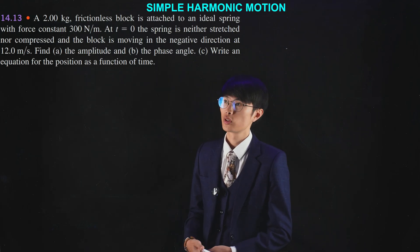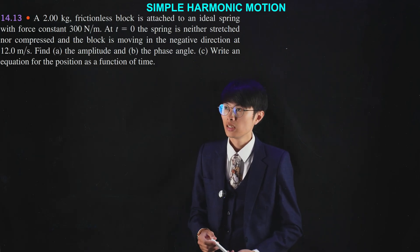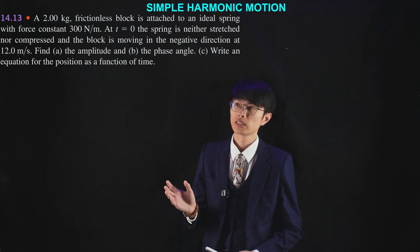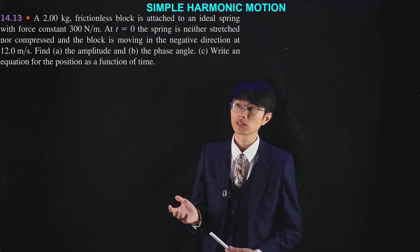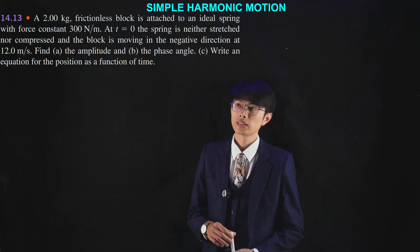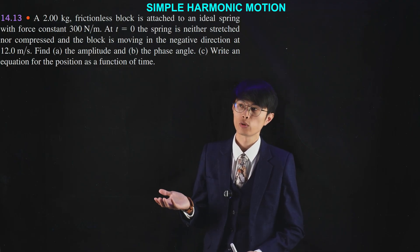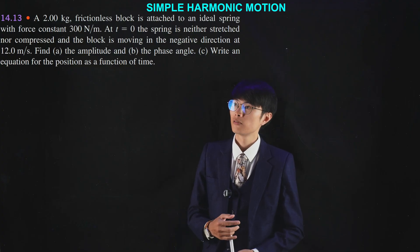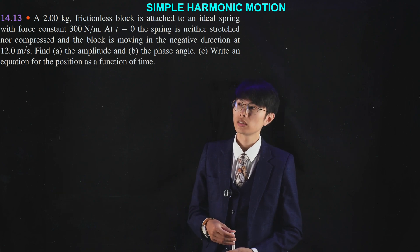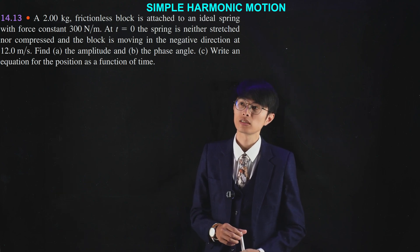Let's look at problem 14.13. A 2.00 kilogram frictionless block is attached to an ideal spring with a force constant of 300 newtons per meter. At t equals zero, the spring is neither stretched nor compressed, and the block is moving in the negative direction at 12.0 meters per second. Find: (a) the amplitude, (b) the phase angle, and (c) write an equation for the position as a function of time.